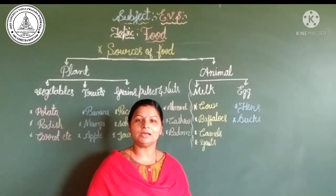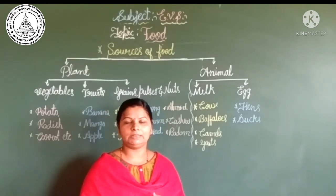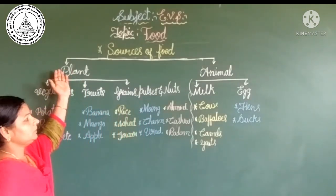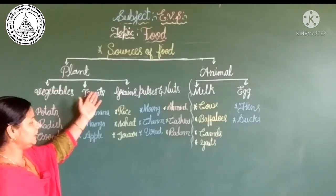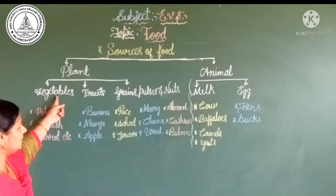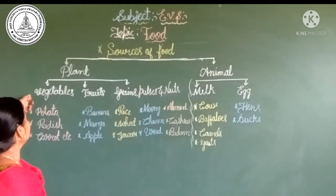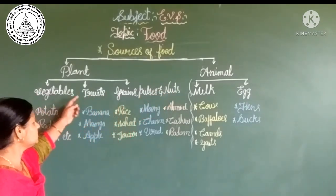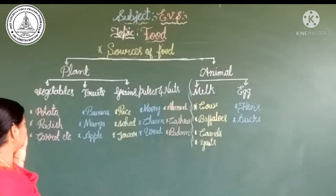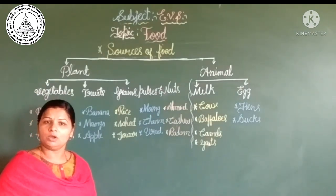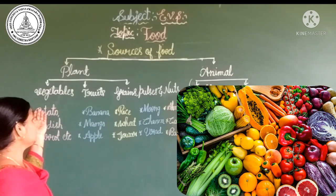So what food do we get from plants? Looking at plant products, food from plants is classified into three types, children. The first one is vegetables, second one is fruits, third one is grains, pulses and nuts. Vegetables include potato, radish, carrot, chili, tomato, cabbage, cauliflower. These are the vegetables we get from plants.